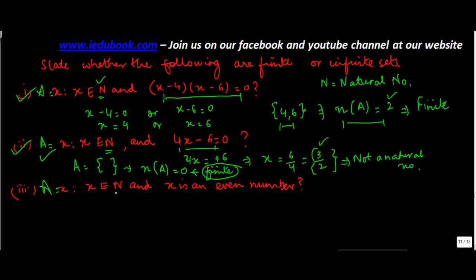Let's see the third one. x belongs to N and x is an even number. So it's 2, 4, 6, 8, 10 and so on. So A is equal to {2, 4, 6, 8, 10, ...}. Can you count these even numbers? The answer is no because this can be infinite. So this is an infinite set.